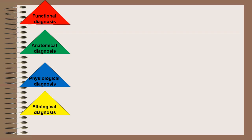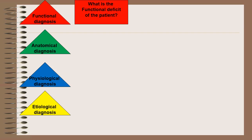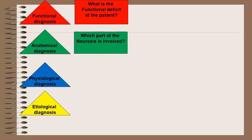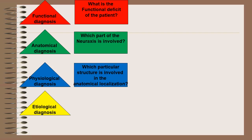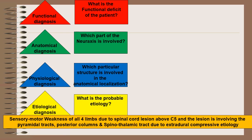Functional diagnosis means what is the functional deficit of the patient. Anatomical diagnosis means which part of the neuraxis is involved. Physiological diagnosis means which particular structure is involved in the particular anatomical localization. And etiological diagnosis means what is the probable etiology.